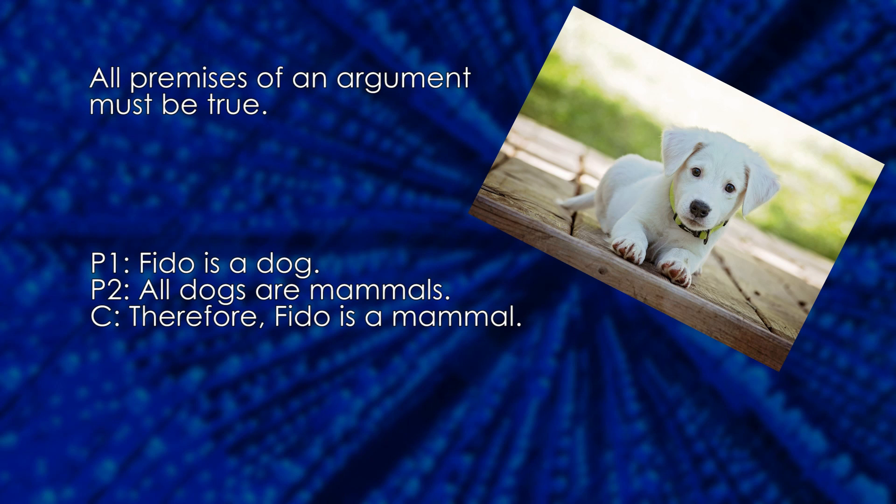As this argument is constructed, that's enough. Both premises are true, and that means that logically the conclusion must also be true. It's impossible for Fido to not be a mammal if Fido is a dog, because all dogs are mammals.